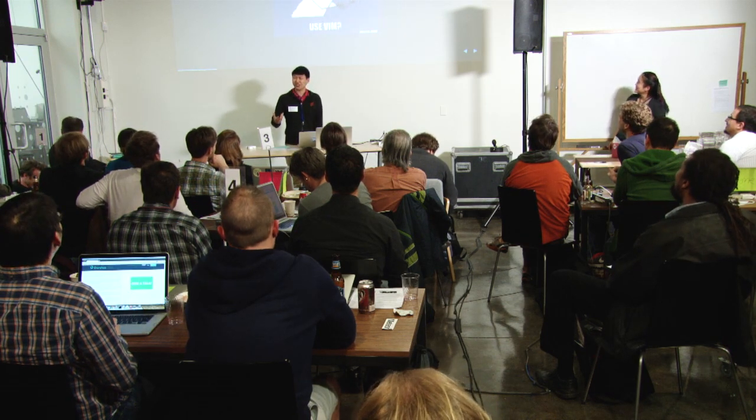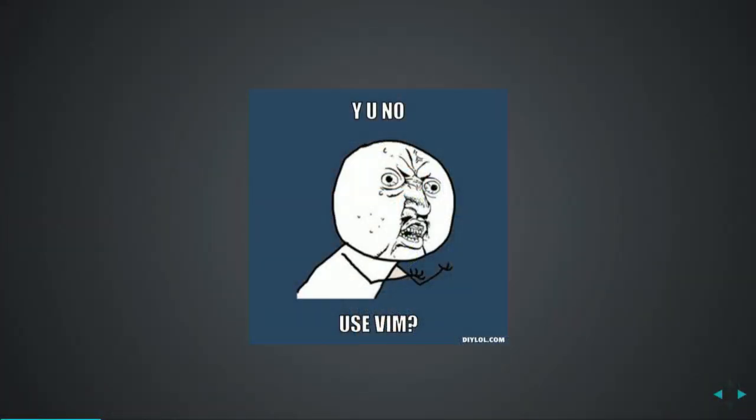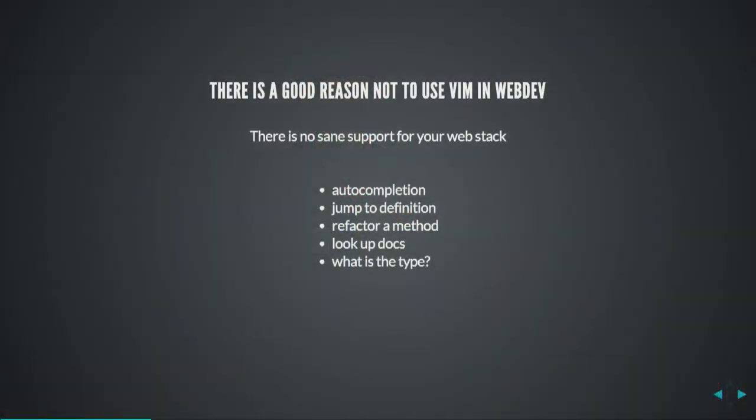So my first question is why you don't use Vim? I think Vim is the best editor. I know like the whole MDG actually uses Emacs, but I'm a hardcore Vim-only user. There are actually some good reasons not to use Vim for web dev, and some of them are like the tool is not just good enough for JavaScript — you don't get autocompletion, like jump to definition, all the good stuff that you are used to in like Java world or even Python.